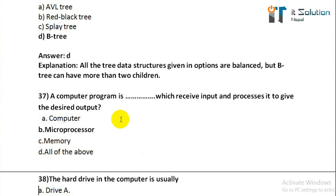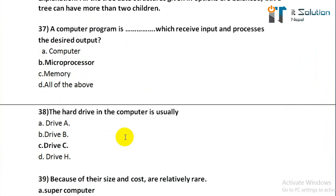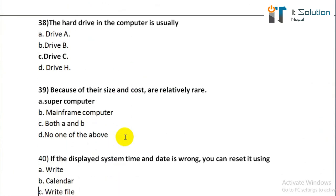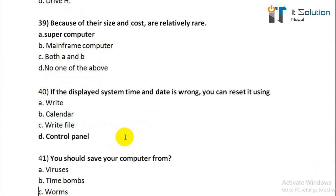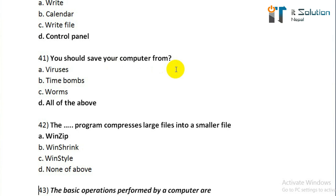Question number thirty-seven: a computer program that receives input and processes it to give the desired output — its correct answer is microprocessor. Question number thirty-eight: the hard drive in a computer is usually option C drive. Question number thirty-nine: because of their size and cost, these are relatively rare — its correct answer is supercomputer. Question number forty: if the display shows the wrong system time and date, you can reset it using option D, Control Panel. Question number forty-one: you should save your computer from? Its correct answer is option D, all of the above. Question number forty-two: the program that compresses large files into smaller files — its correct answer is zip.